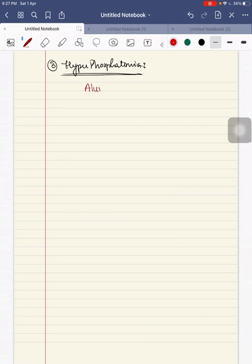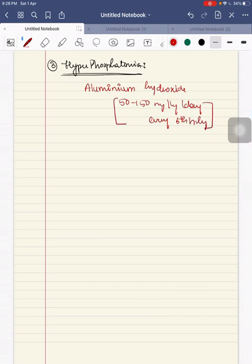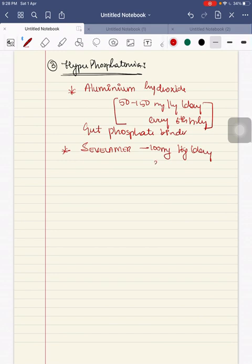Third is for hyperphosphatemia, you can use aluminum hydroxide at the dose of 50 to 150 mg per kg per day every 6th hourly. It is a gut phosphate binder. Or you can use Sevelamer at the dose of 100 mg per kg per day in 3 divided doses. It is an alternate gut phosphate binder.